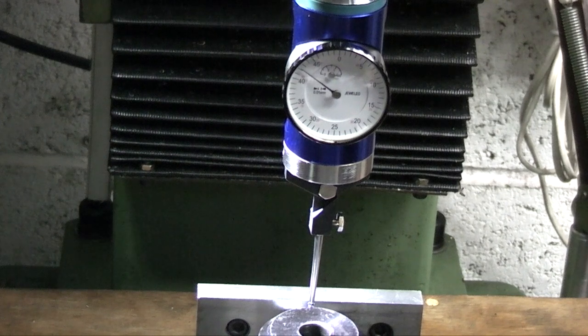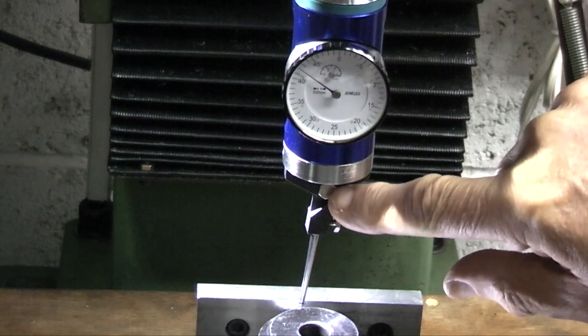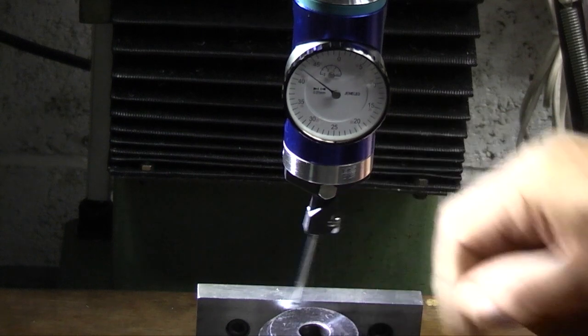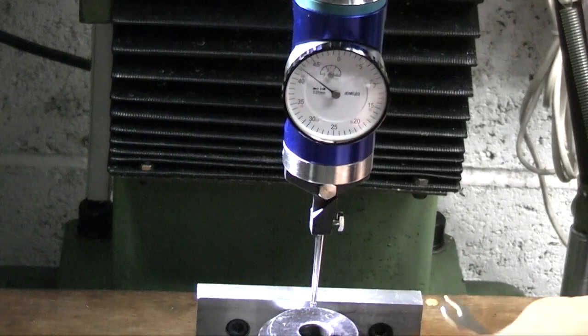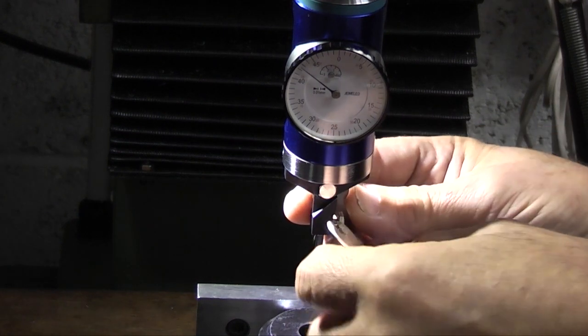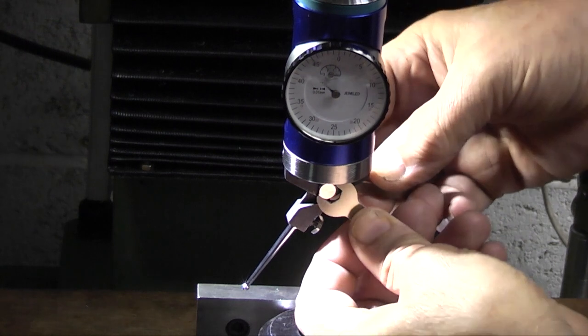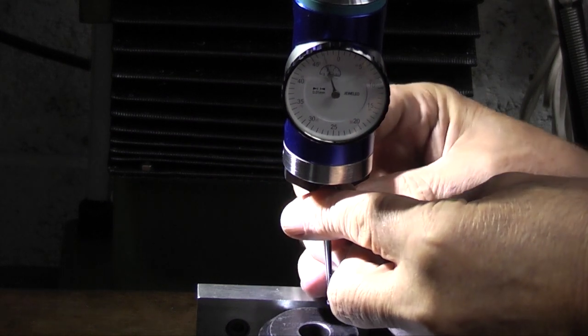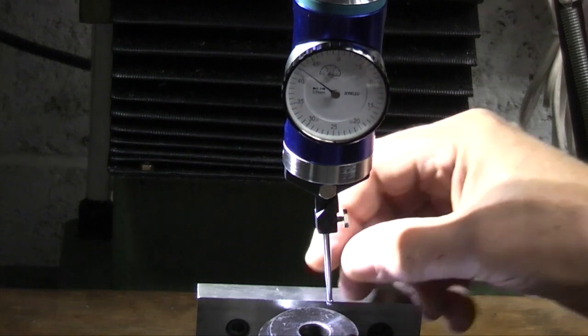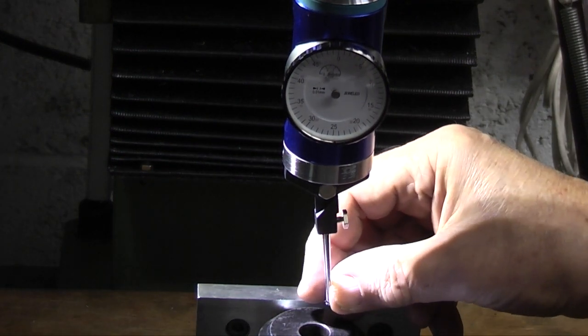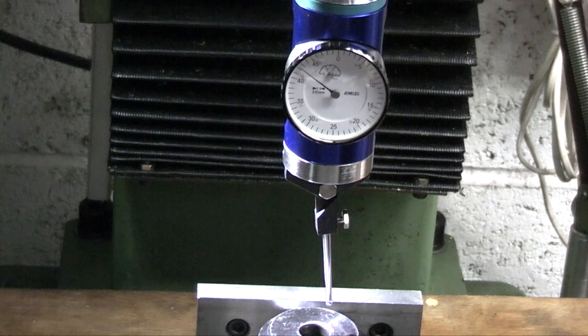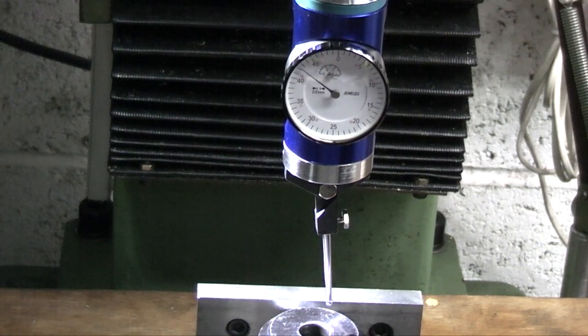I got in touch with Banggood and they contacted the supplier and they said that this nut here has to be tight. So if you've got one that's like this, you need to tighten this up tight. There's a nut on the back, one on the front. So now when this moves, the dial indicator moves. That took me some time to figure that out with the help of the supplier.